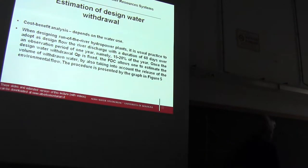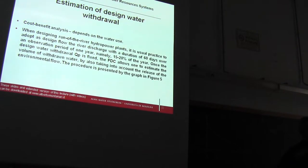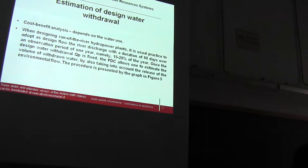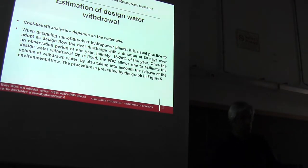If you design your plant for such a duration, it means that on average — keep in mind that the flow duration curve gives you an average picture — your plant works at full power on average 30 days a year. In the remaining 335 days, it works at a reduced load.